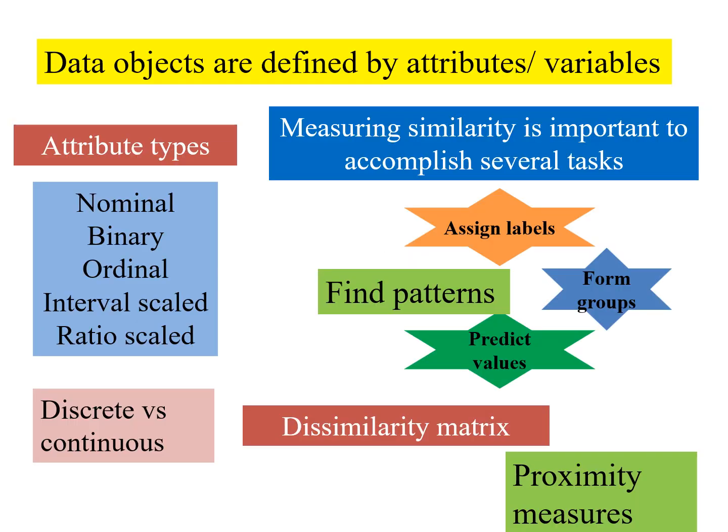We have seen earlier that data objects are defined by attributes or variables. The types of attributes have been discussed as nominal, binary, ordinal, interval scale, and ratio scale. These are numeric, and why do we want to measure similarity? Because we need to do certain tasks like assigning labels, forming groups, predicting values, and so on.